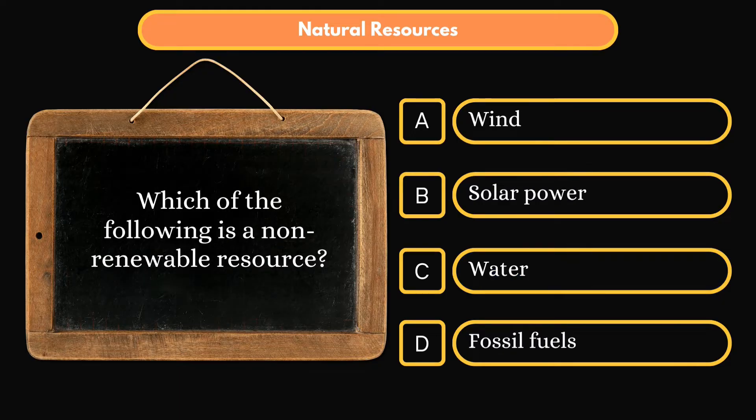Which of the following is a non-renewable resource? Option A: Wind. Option B: Solar Power. Option C: Water. Option D: Fossil Fuels. Correct answer is Option D: Fossil Fuels.